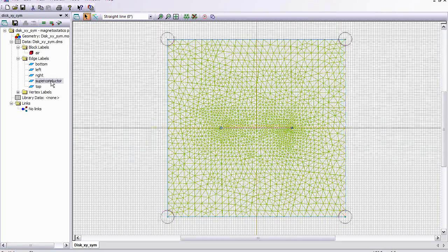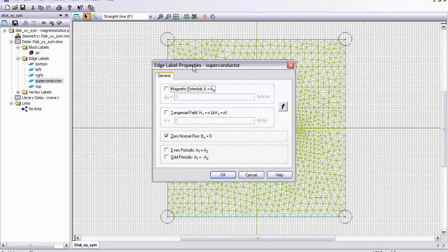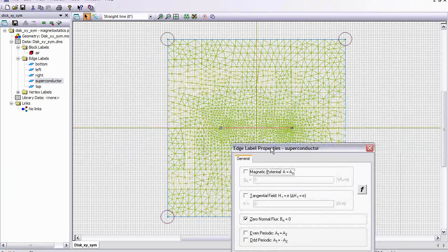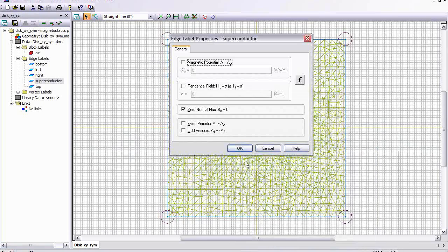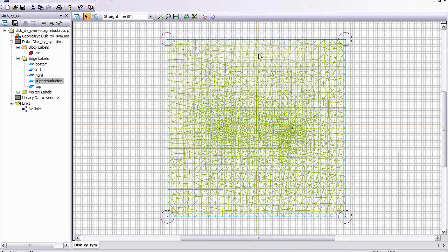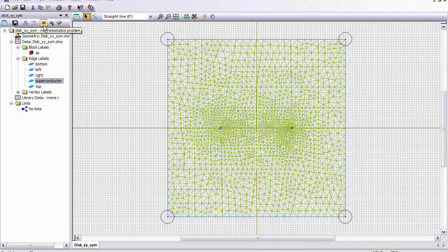The superconductor, the central boundary here, has zero normal flux. So the magnetic field lines will be expelled out around this single boundary here. Later on, we'll model finite thickness. For right now, I'll illustrate the boundary condition.